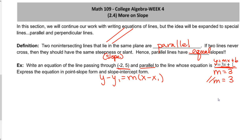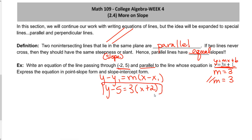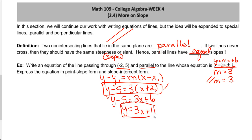So let's write our equation of the line. We get y minus 5 equals 3 times (x minus negative 2), which becomes plus 2. That's our point-slope form. Then to get slope-intercept form, we distribute to get 3x plus 6, and add 5 over. So y equals 3x plus 11 is our slope-intercept form.